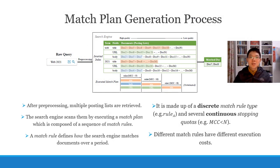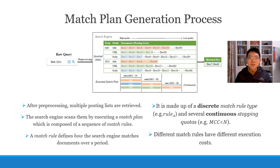This figure basically illustrates the process of matchplan generation. After pre-processing, multiple posting lists representing different query terms and fields are retrieved from the inverted index system, in which documents are organized in descending order of quality. The search engine scans the posting lists by executing a matchplan, which is composed of a sequence of match rules. A match rule defines how the search engine matches a document over a period of time. It is made up of a discrete match rule type — for example, rule A — and several continuous stopping quotas.